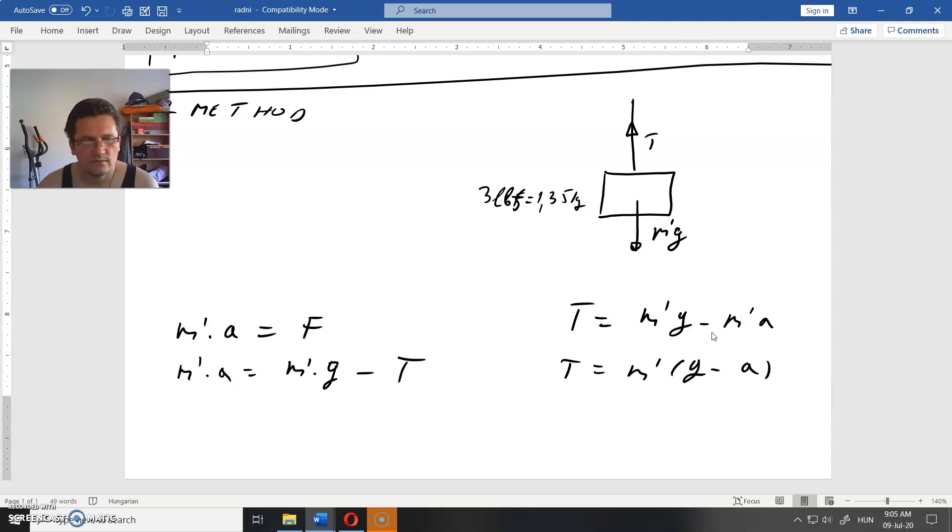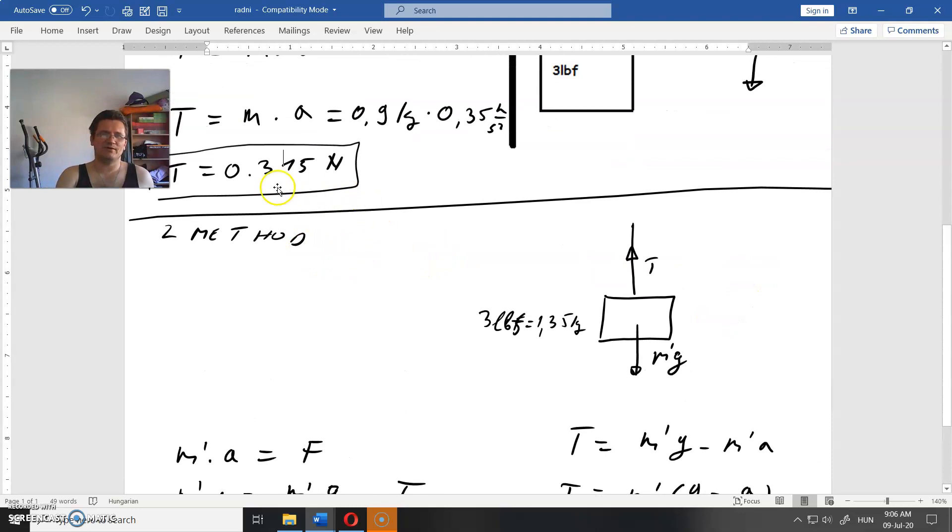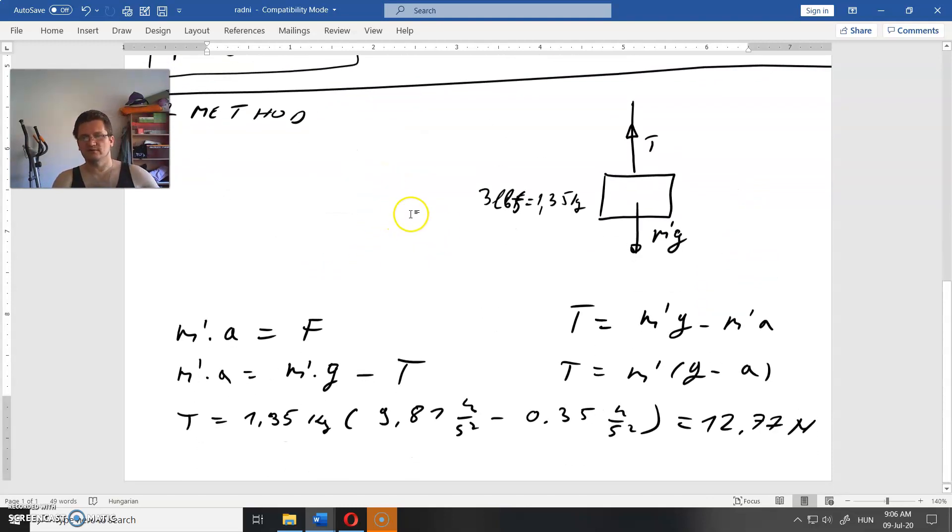T equals M prime is 1.35 kg, times 9.8 minus 0.35, which equals 12.77 Newtons. What did we get for the first assignment? We got 0.315. We are supposed to get the same result.